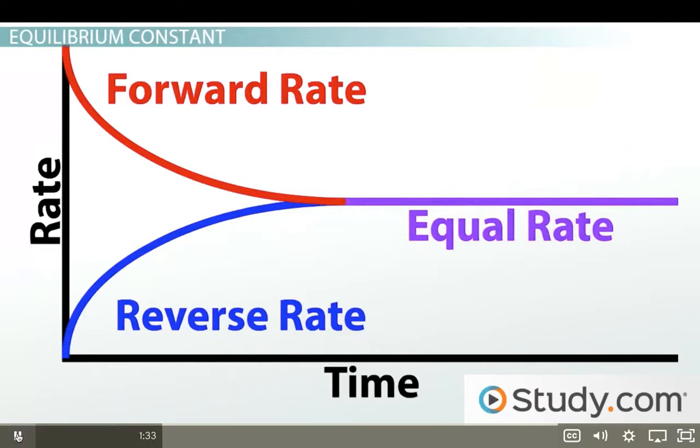The rate of reactions are often shown in a graph like this one. This graph compares the rate of the forward reaction to the rate of the reverse reaction. To start, the forward reaction has the maximum rate possible, and the reverse reaction increases as there is more product to turn back into reactants.